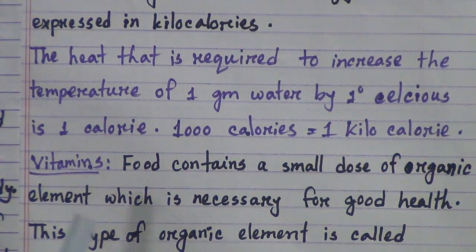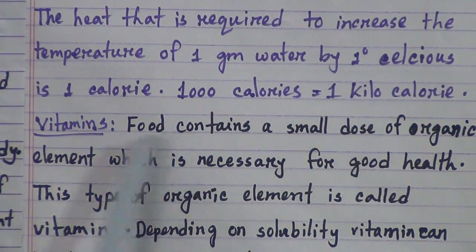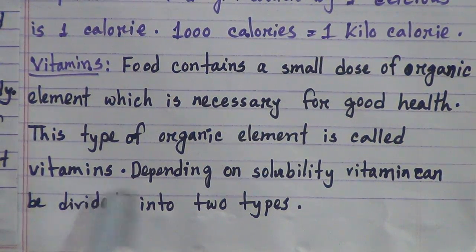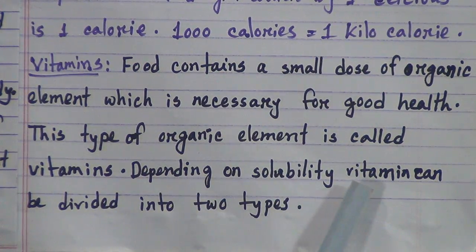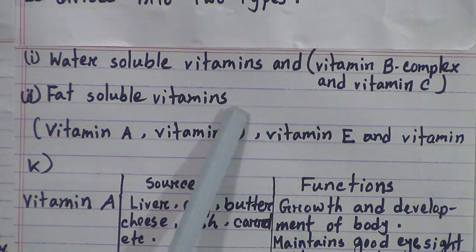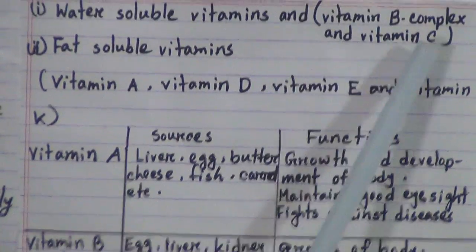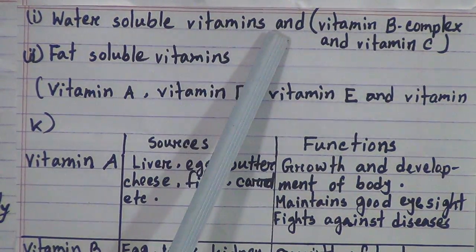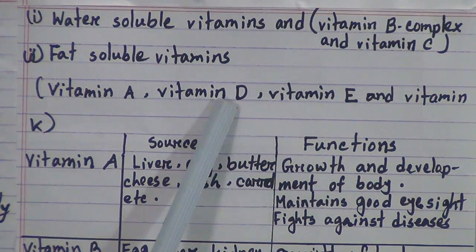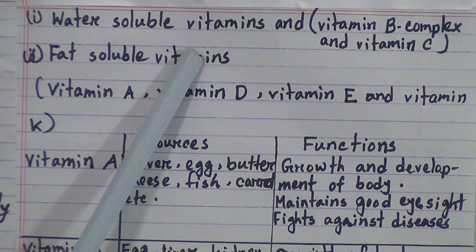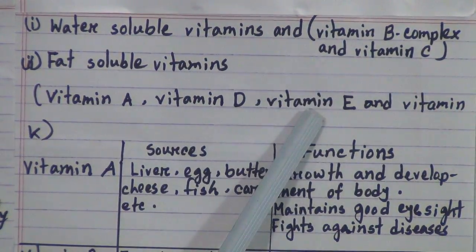Now we will discuss vitamins. Food contains a small dose of organic elements which are necessary for good health, and this type of organic element is called vitamins. Depending on solubility, vitamins can be divided into 2 types: water-soluble vitamins and fat-soluble vitamins. Water-soluble vitamins are vitamin B complex and vitamin C. Fat-soluble vitamins are vitamin A, vitamin D, vitamin E and vitamin K. This is very important for your MCQ.